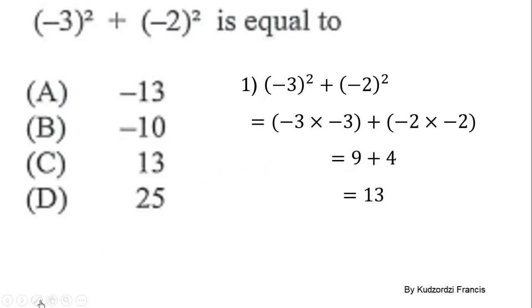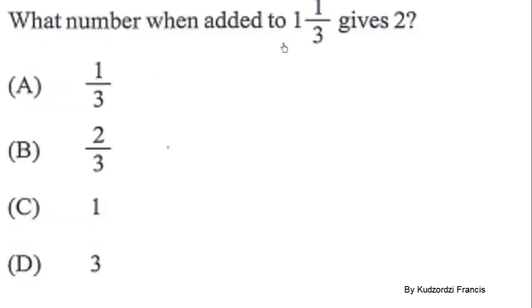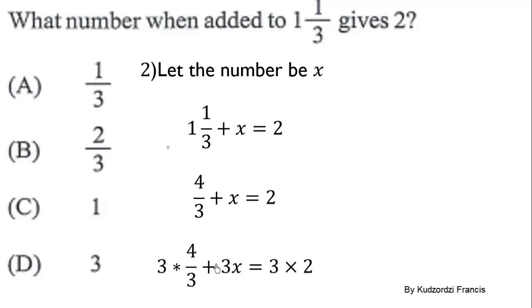Therefore the correct answer is C. What number when added to 1 and 1/3 gives 2? Let the number be x, then we add it to 1 and 1/3. Change this to improper fraction to get 4/3. Multiply through by 3 to get 4 plus 3x equals 6. Group like terms: 3x equals 6 minus 4, which gives 3x equals 2. Divide by 3 to get x equals 2/3.